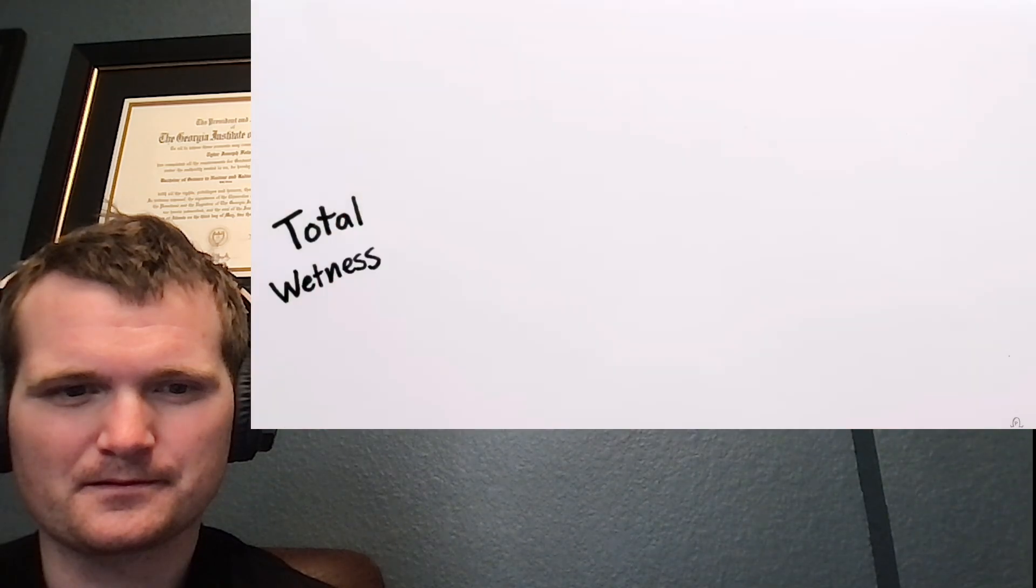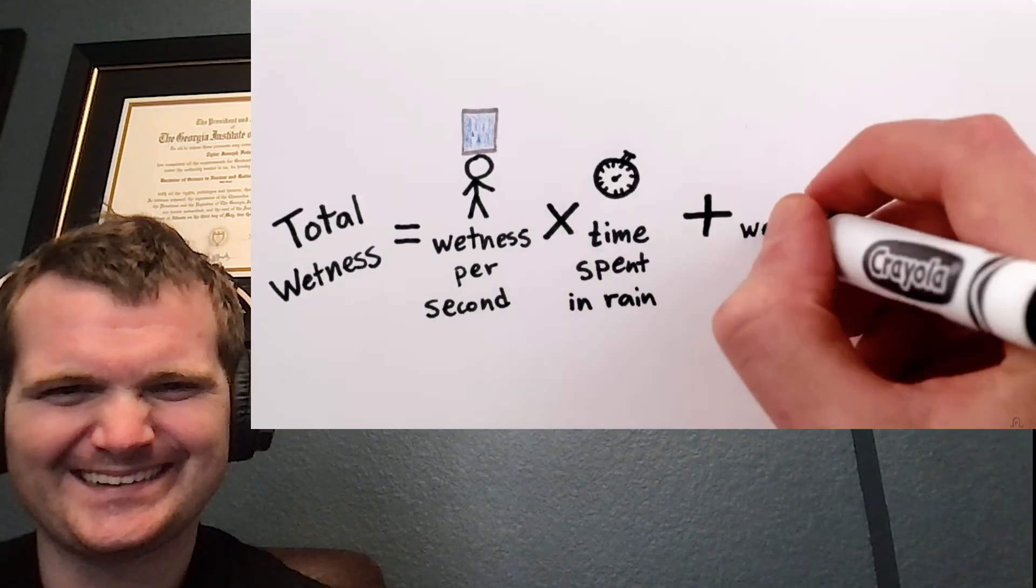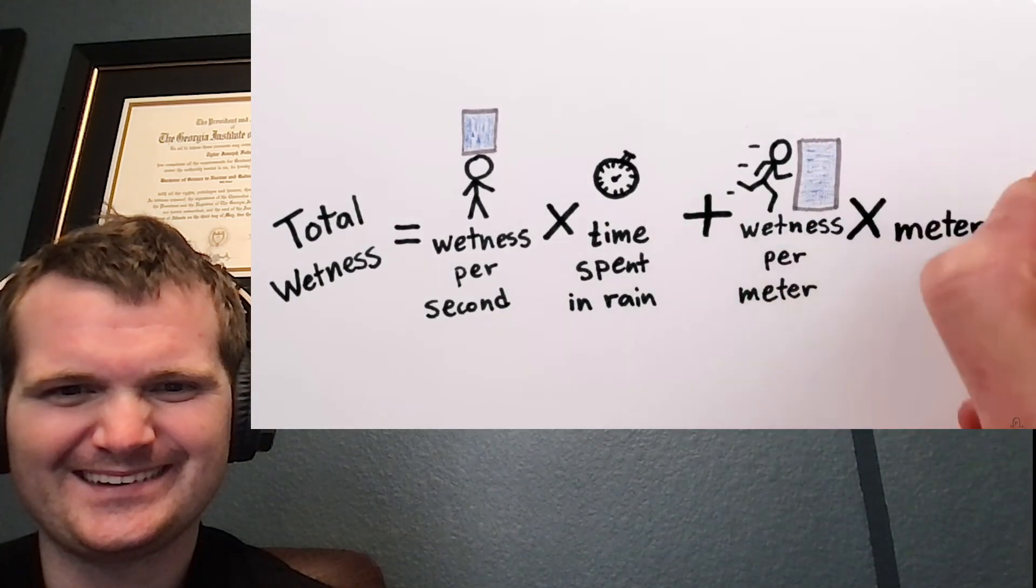So your total wetness is equal to the wetness per second for rain from the top times the amount of time you spend in the rain, plus the wetness per meter for rain from the side times the number of meters you travel.